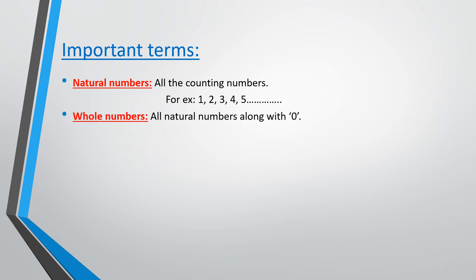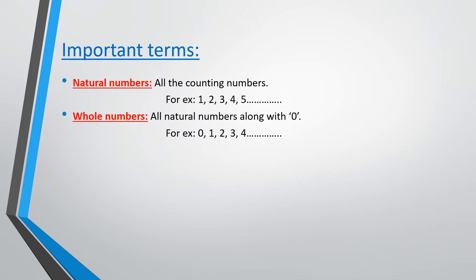What are whole numbers? Whole numbers are nothing but all the natural numbers along with 0. So whole numbers start from 0, 1, 2, 3, 4 and so on.